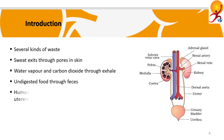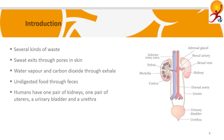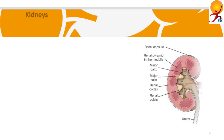In humans, the excretory system consists of a pair of kidneys, one pair of ureters, a urinary bladder and a urethra, with the main component being the kidneys.